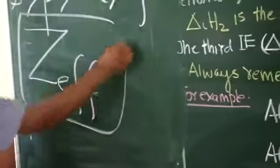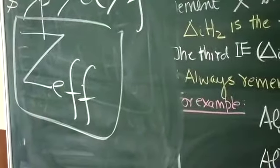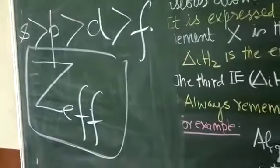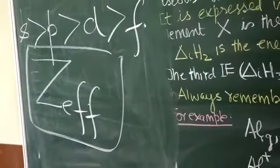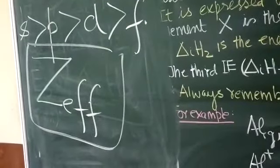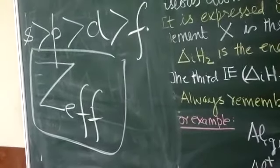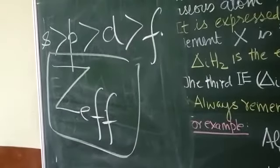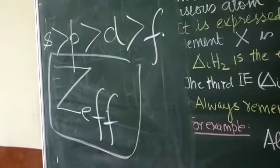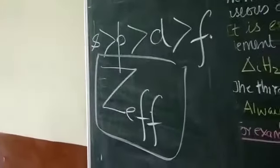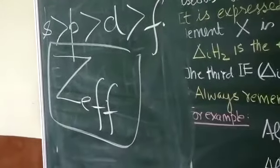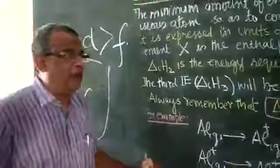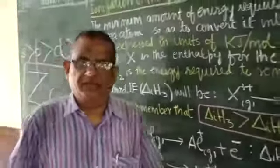The actual charge felt by the valence shell electron is called effective nuclear charge, written as Z-effective (Zeff). The repulsive force felt by the valence electrons from the electrons present in the inner shell is called the shielding effect or screening effect. I hope you have understood this. Please make your own notes and if you have any problems, please talk to me.